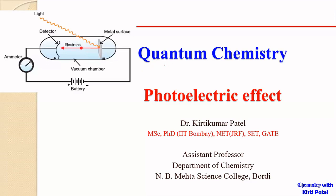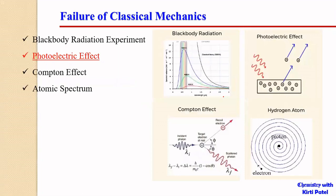Dear students, we are in our second lecture on quantum chemistry. In this lecture we will focus on the photoelectric effect. In the last lecture we had seen the black body radiation experiment. There are four classical experiments responsible for the failure of classical mechanics. Today we will focus on the photoelectric effect; further two experiments are the Compton effect and the atomic spectrum of hydrogen atom.